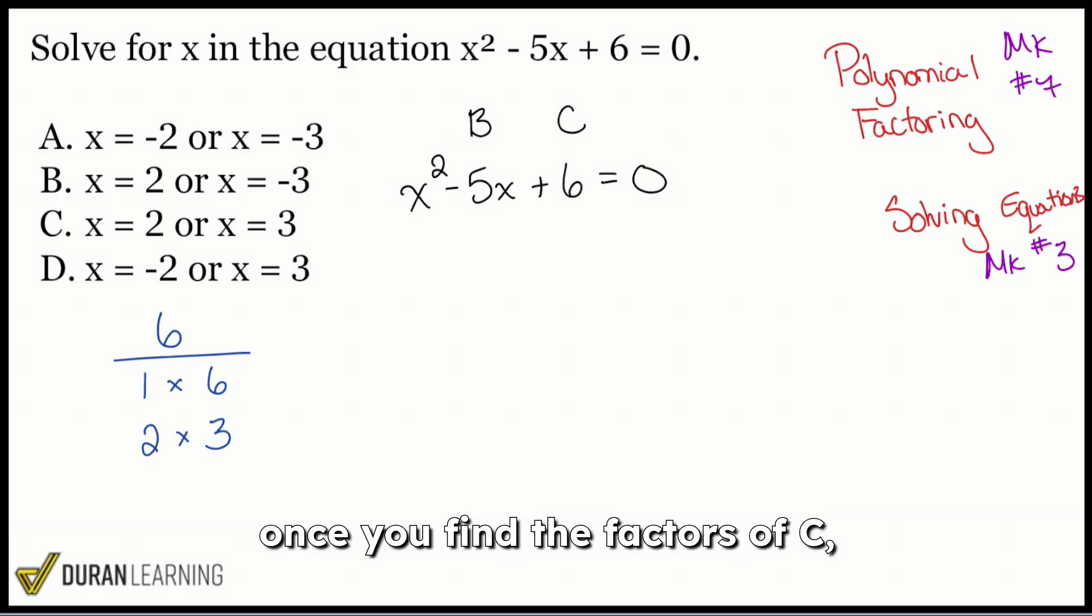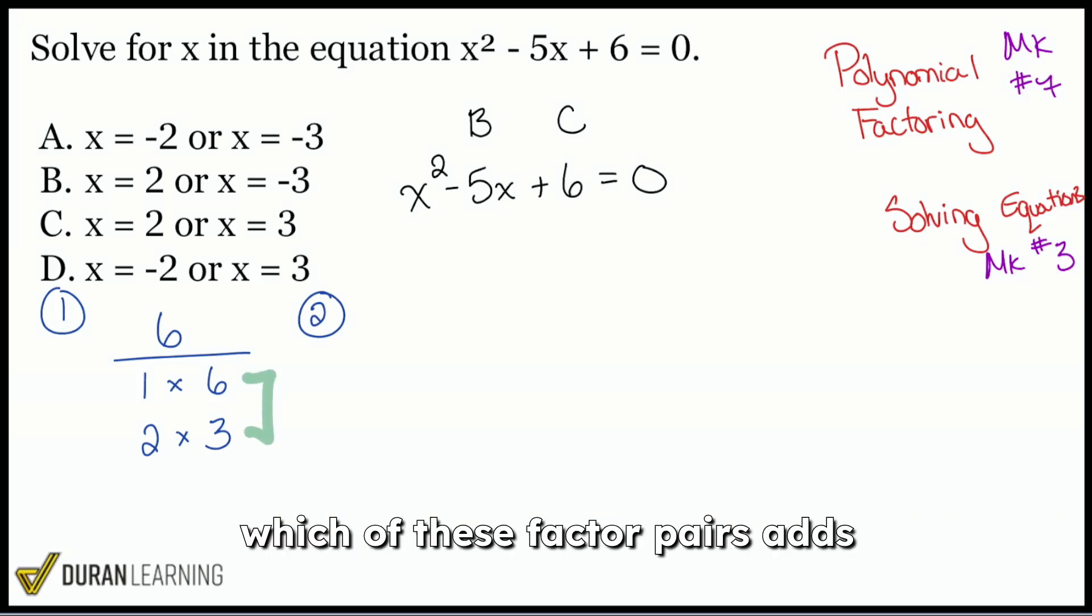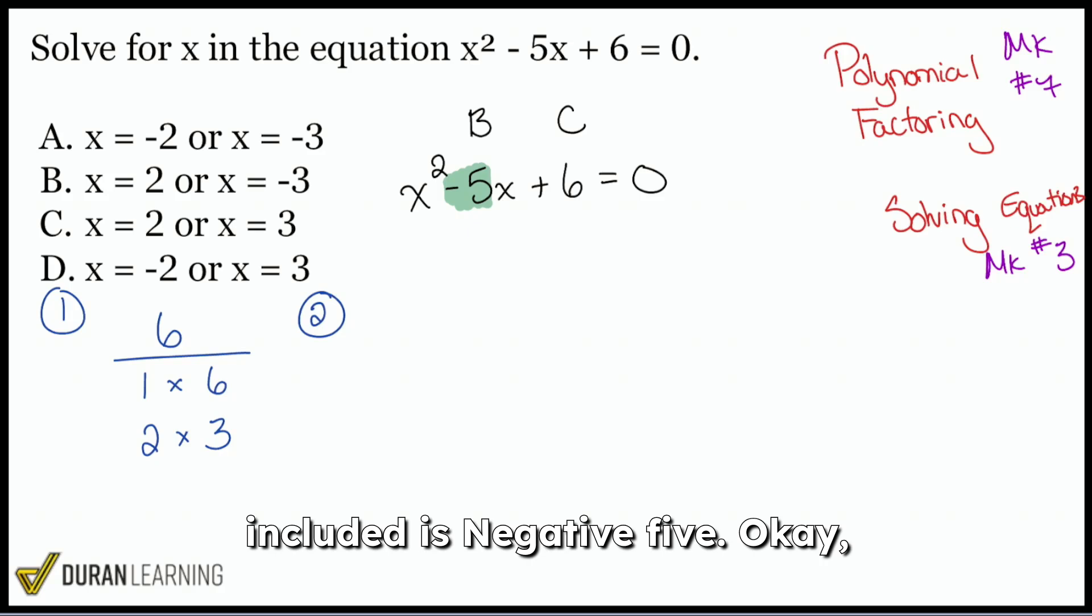Now, once you find the factors of C, that's step one, step two is going to be which of these pairs, which of these factor pairs adds up to B and B with the sign included is negative five. Okay. So which of these adds up to negative five?